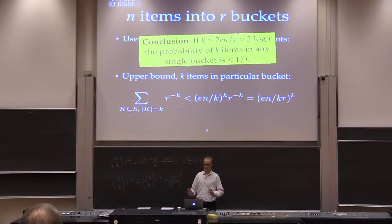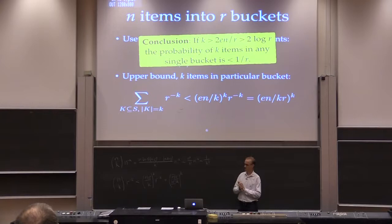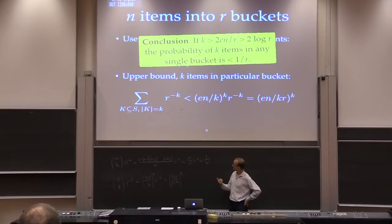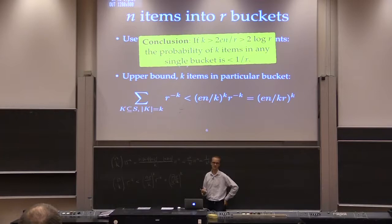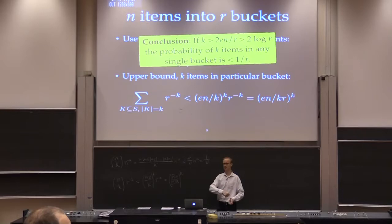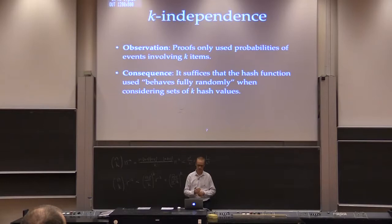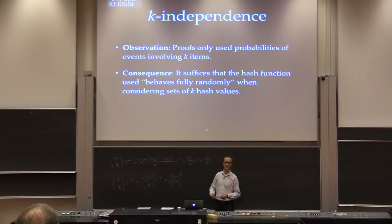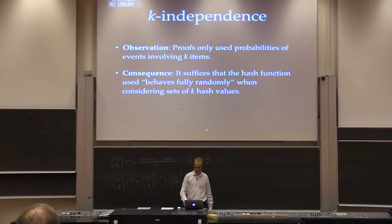All of this was using the assumption that we were hashing randomly and independently. But if you look at these proofs, all the probabilities are of the form r to the minus k or n to the minus k, because it's a probability about an event on k hash values. The probabilities I actually need make the analysis speak about k hash values colliding. The consequence is that if we could come up with a hash function that behaves fully random when we look at just k of the hash values, then all these things would go through. This motivates the notion of k-independence.